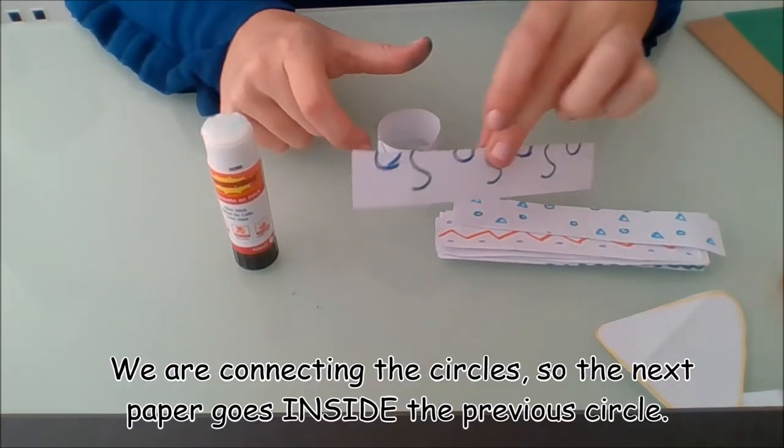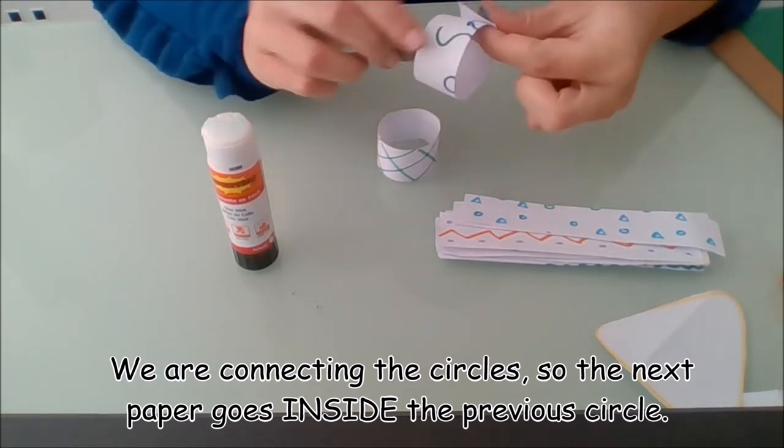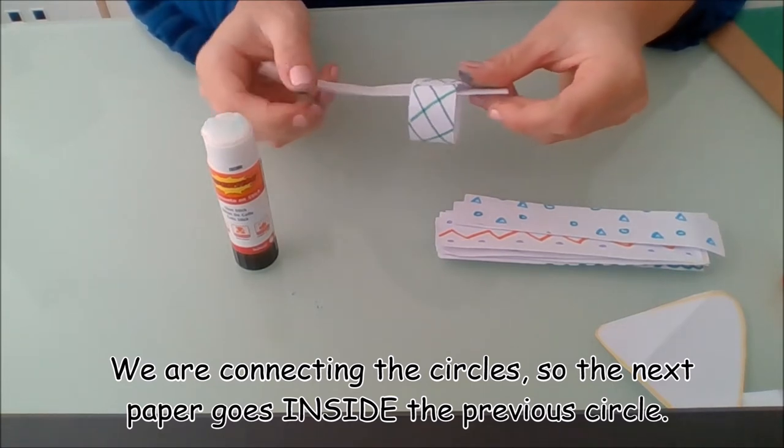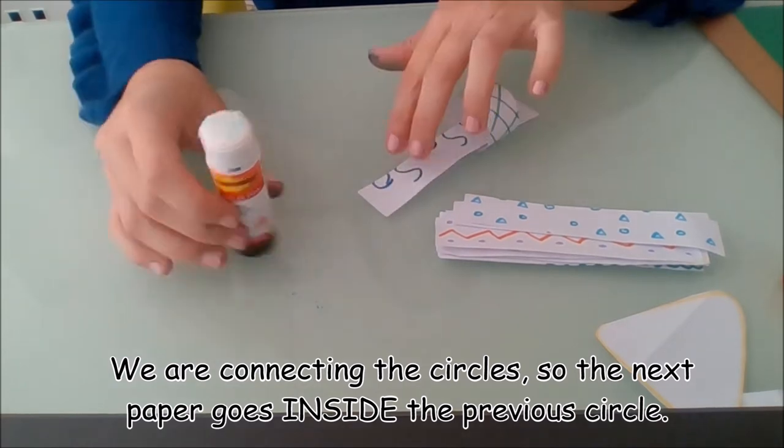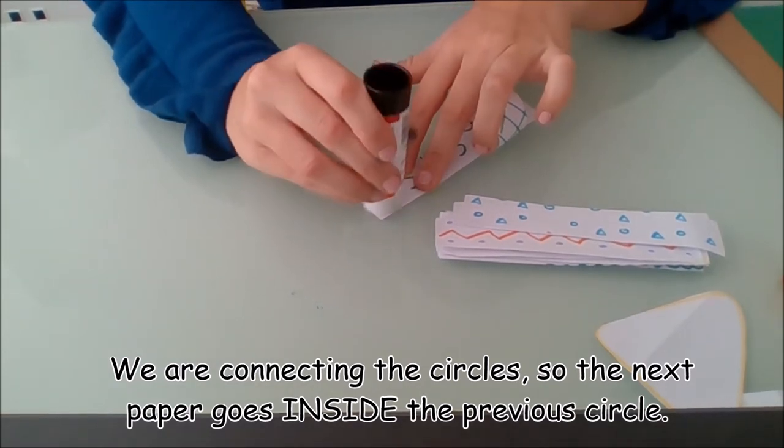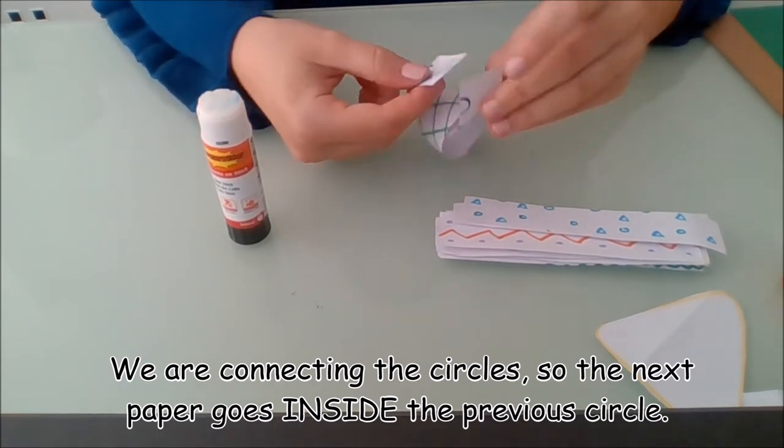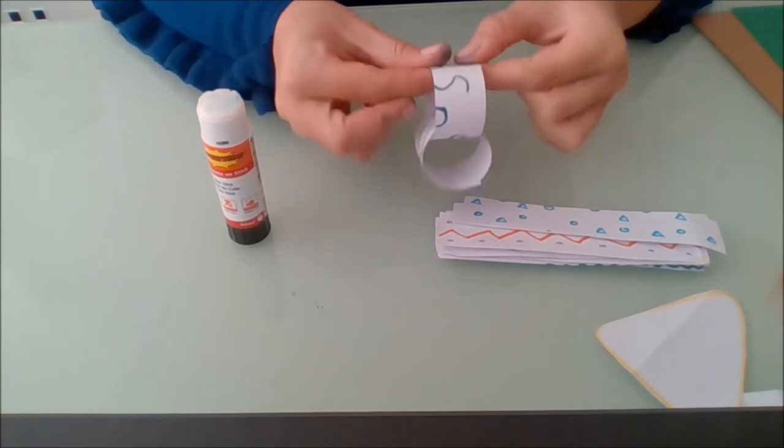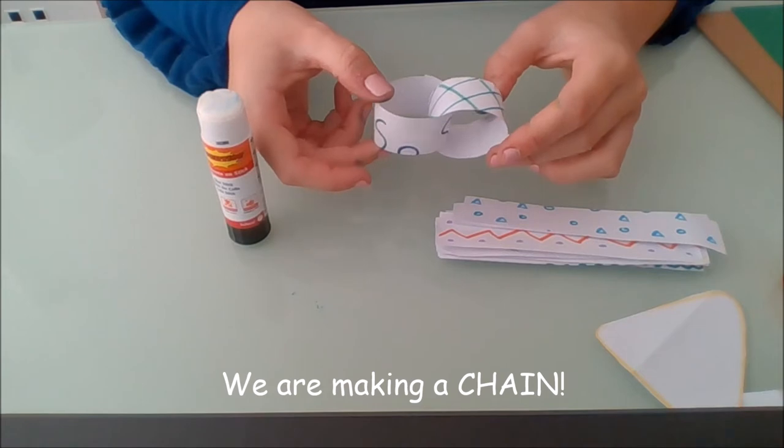We get a different piece of paper, but instead of making the circle differently, we put the paper inside, just like that. We put the glue and we press. Do you see what we're doing? They're making a chain. Now they're stuck together.